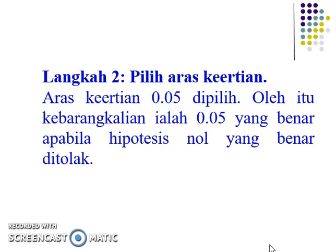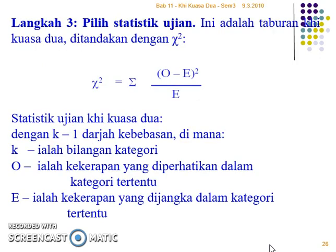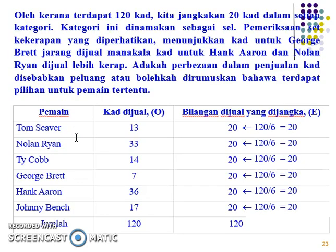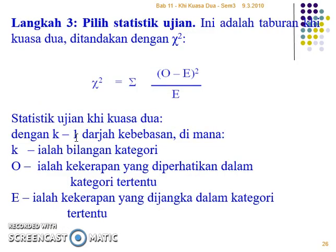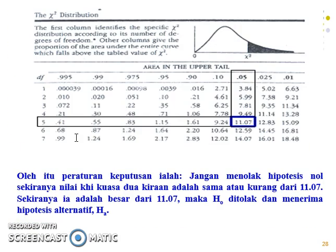We move to the second step: identify alpha, which is 0.05. We calculate the chi-value using the formula: observed minus expected, squared, divided by expected. The degrees of freedom is k minus 1, where k is the number of groups — 6 cells, so 6 minus 1 equals 5. From the chi-square table, at degrees of freedom 5 and alpha 0.05, the critical value is 11.70. This is our standard to compare against our manually calculated value.